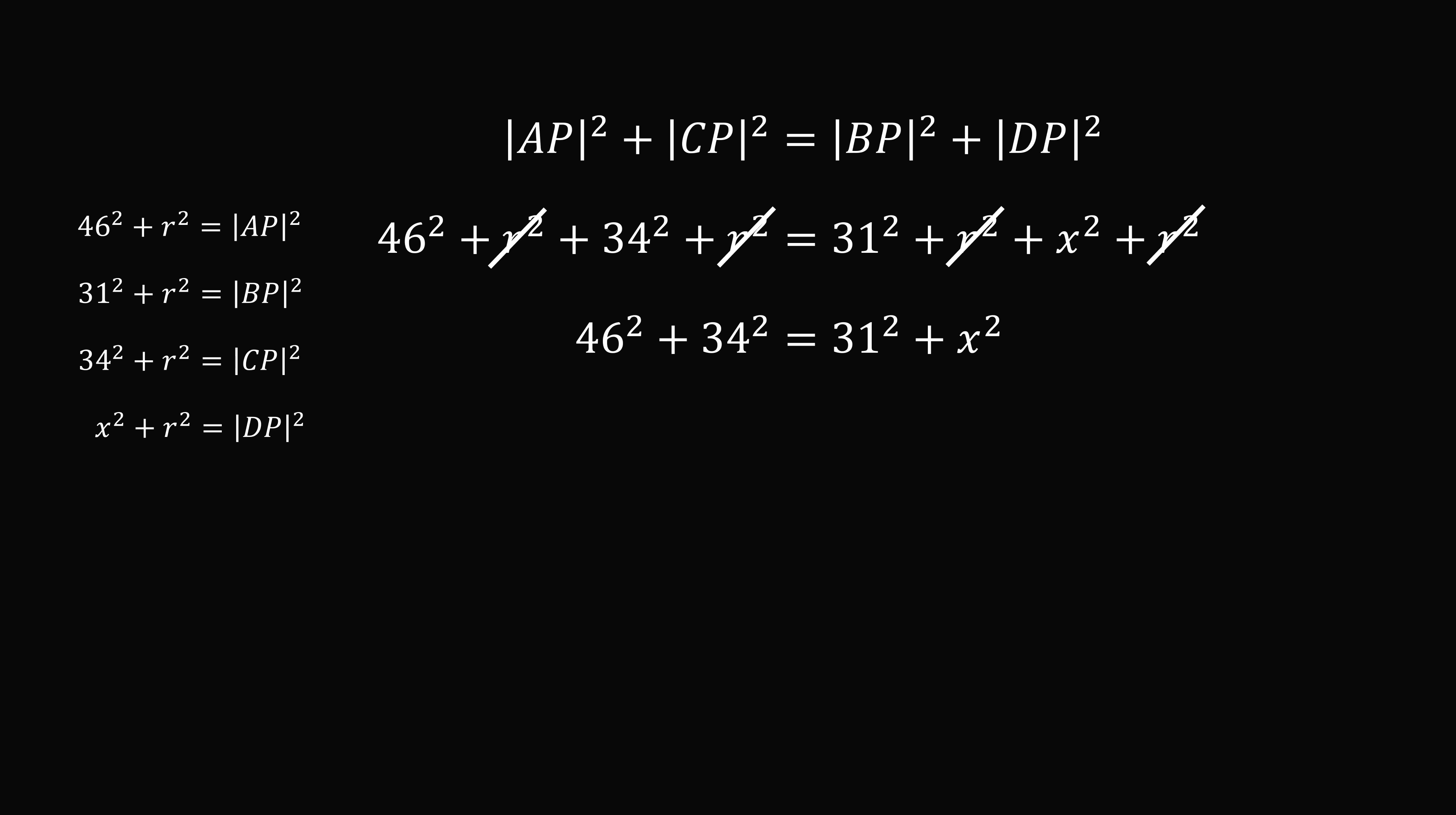We want X to be a non-negative length. So we will take the non-negative square root. So X is equal to the square root of 46 squared plus 34 squared minus 31 squared. And that is equal to the square root of 2311 which is approximately equal to 48.073.